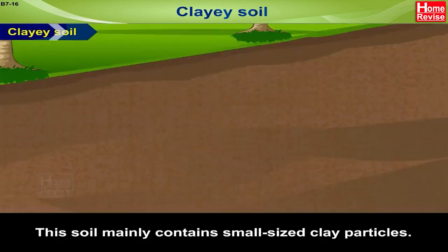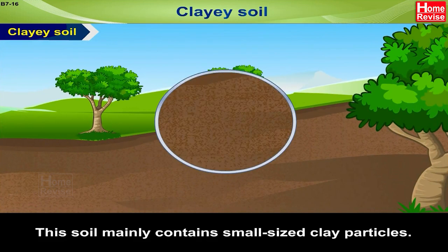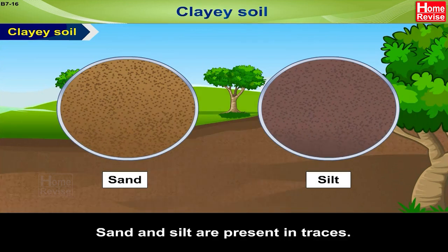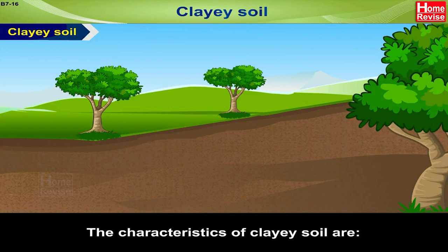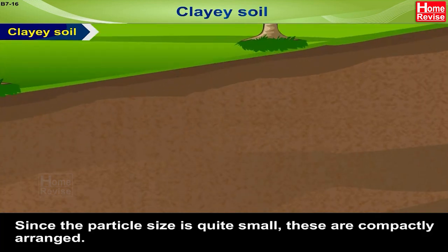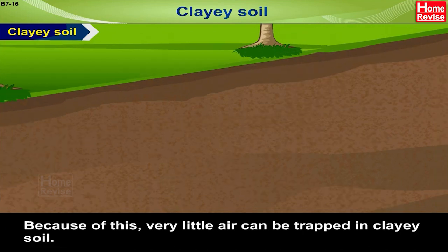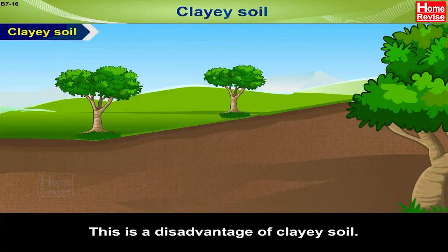Clay Soil: This soil mainly contains small-sized clay particles. Sand and silt are present in traces. The characteristics of clay soil are: since the particle size is quite small, these are compactly arranged. Because of this, very little air can be trapped in clayey soil. This is a disadvantage of clayey soil.